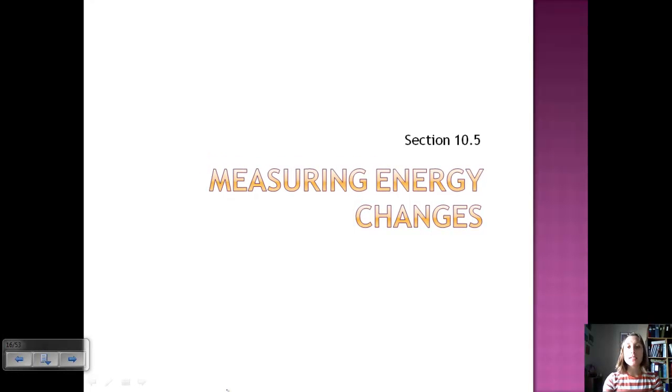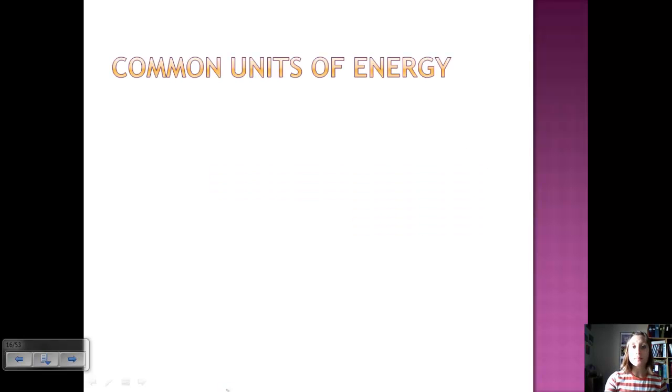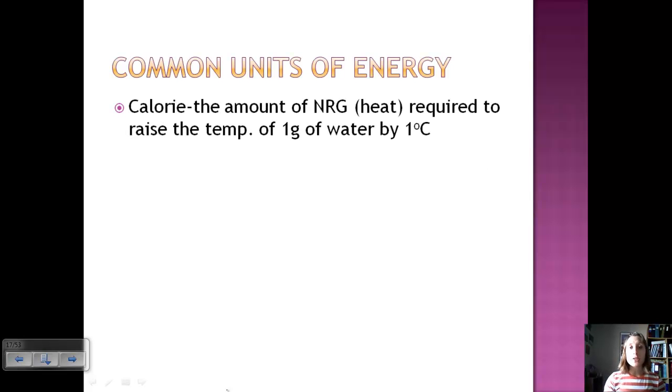We're going to discuss section 10.5, which talks about how to measure energy changes. We talked about the fundamentals of energy and what it is, and now we're going to discuss how to calculate it within a chemical reaction. Let's first talk about some common units of energy. First one is the calorie. This is the amount of energy or heat that is required to raise the temperature of one gram of water by one degree Celsius. So we're looking at just water here.